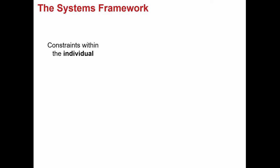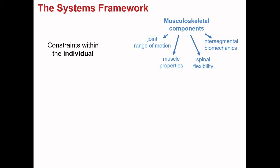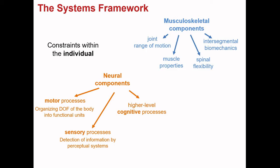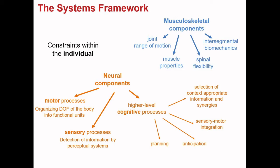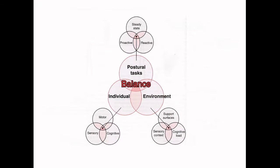Looking even closer at the subsystems within the individual: when talking about musculoskeletal components, we include joint range of motion, muscle properties, spinal flexibility, and intersegmental biomechanics. When talking about neural components, we include motor processes that organize the many degrees of freedom of the body into functional movement, sensory processes such as the detection of information by various perceptual systems, and higher level cognitive processes including planning, anticipation, sensory-motor integration, and the recruitment and selection of context-appropriate information and synergies.